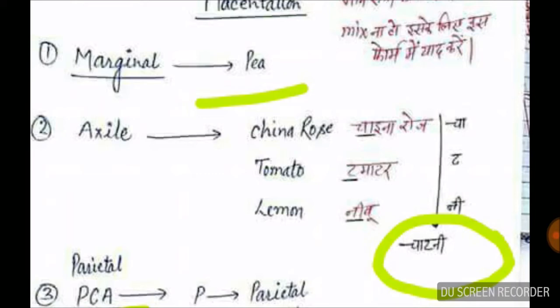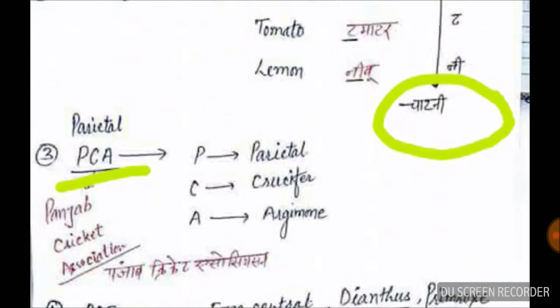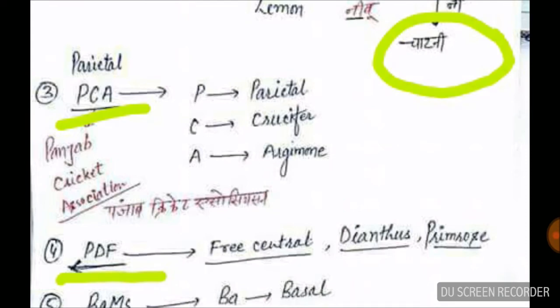For parietal placentation, examples include China rose, tomato, and lemon. You can use P for parietal and C for crucifer to remember this group.